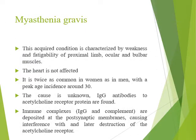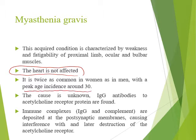The most important subject in this lecture is myasthenia gravis. Myasthenia gravis is an acquired condition characterized by weakness and fatigability of proximal muscles, ocular, and bulbar muscles; the heart is not affected. It is twice as common in women as in men, since myasthenia gravis is an autoimmune disease. The cause is usually unknown; there are IgG antibodies affecting the acetylcholine receptor protein. IgG and complement are deposited at the post-synaptic membrane, causing interference with and later destruction of the acetylcholine receptor.